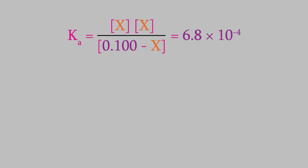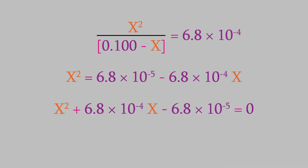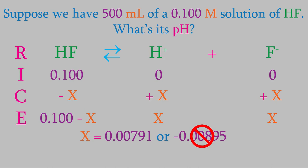Now we solve for x. The numerator simplifies to x squared. We multiply both sides by (0.100 − x) and move everything to one side, giving us a quadratic equation. Using the quadratic formula or a programmable calculator, we get x equals either 0.00791 or negative 0.00895. The negative number is impossible because it would give us a negative concentration, so x equals 0.00791. Using that in our pH equation, we get a pH of 2.10.